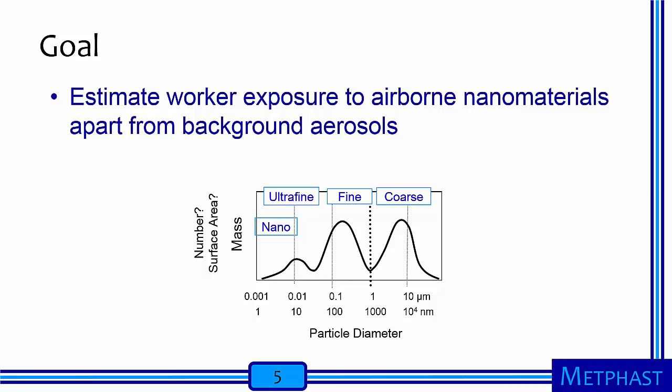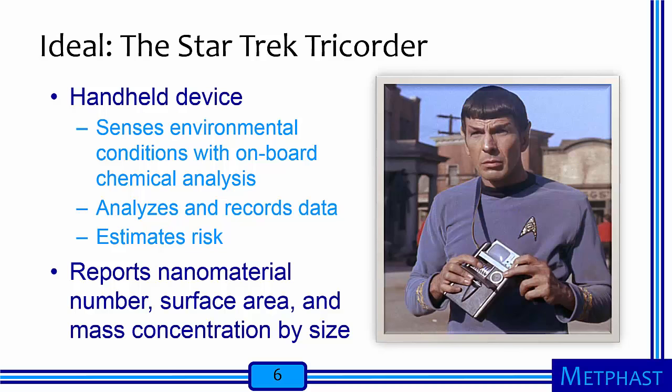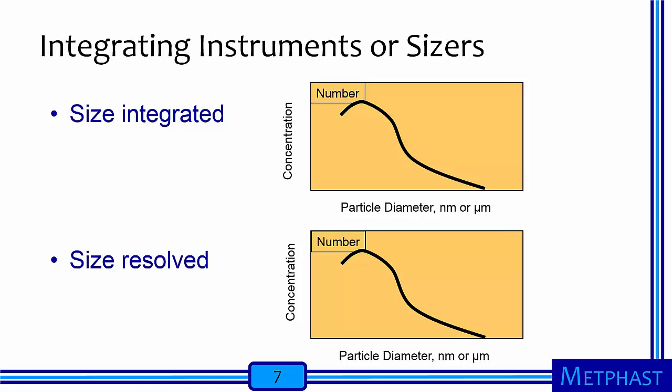The goal of sampling in the context of nanotechnology is to estimate worker exposure to airborne nanomaterials apart from background aerosols that may be present in the workplace. Ideally, we need a tricorder, as originally seen carried by Dr. Spock in a 1960s Star Trek episode. The tricorder is a multifunction handheld device used to sense environmental conditions, analyze and record data, and estimate risk. The use I have in mind for such a device is to report nanomaterial number, surface area, and concentration by size. We don't have such a device, although we are working towards this goal.